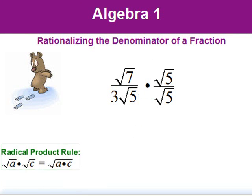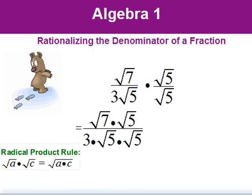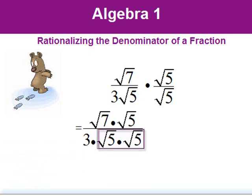The radical product rule lets us combine our numerators and denominators like this. The square root of five times the square root of five is equal to five from the definition of square root.